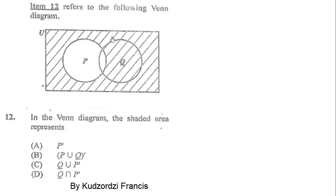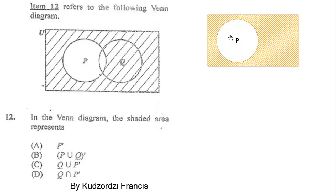Now we are using this diagram to solve question 12. In the Venn diagram, the shaded area represents - this one is straightforward. This is set B, and the region that is shaded is outside B, so that is B prime. The shaded region is B prime. All the outside of B is shaded, therefore B prime is the correct answer.